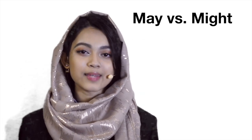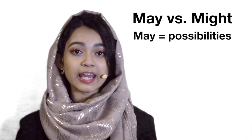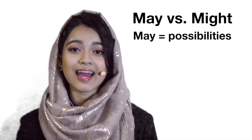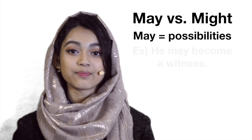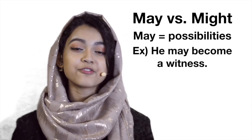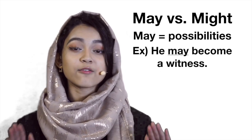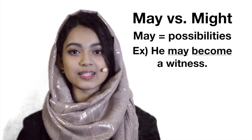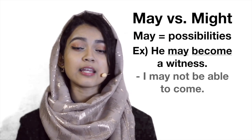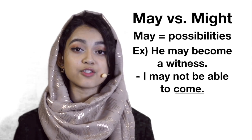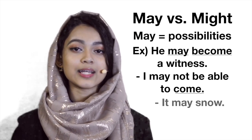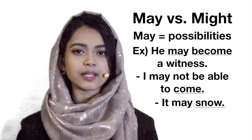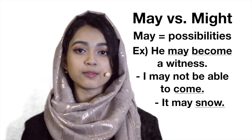You can also use 'may' for possibilities — meaning something that can happen. After using 'may,' you always follow it with a present tense verb. For example: 'He may become a witness' — 'become' is present tense. 'I may not be able to come' — 'come' is present tense. 'It may snow' — 'snow' is present tense. These all describe something that may happen, a possibility.